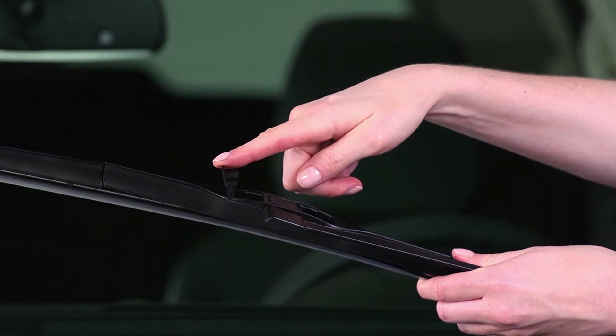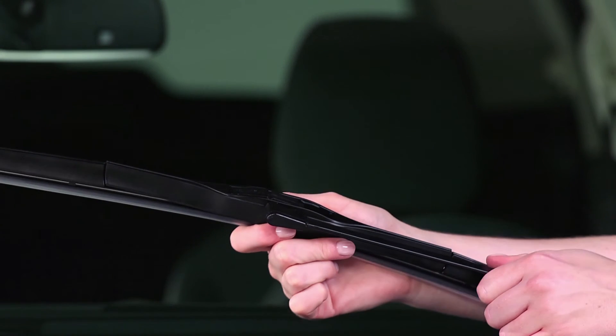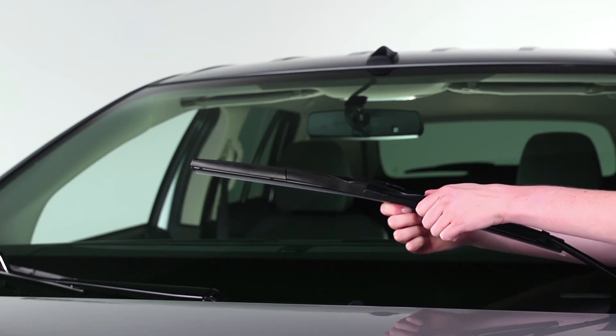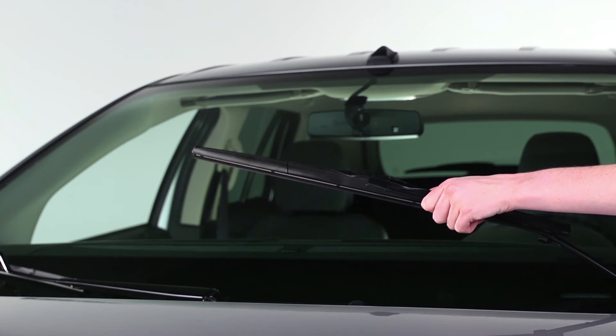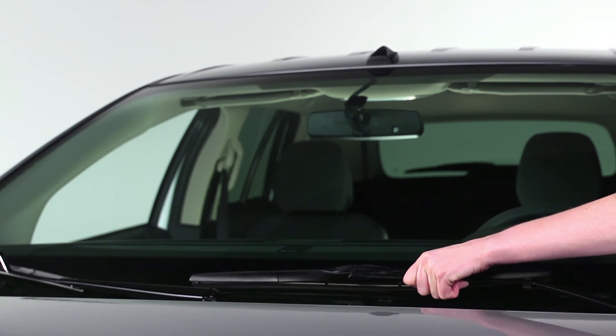Then lower the Rain-X tab. Tug on the blade to make sure it's properly fastened. Remove the plastic squeegee cover on the blade, and gently lower the wiper arm onto the windshield.